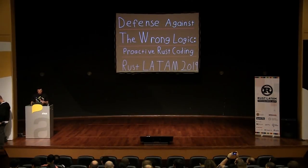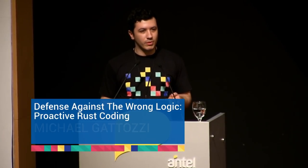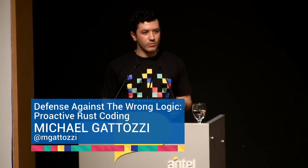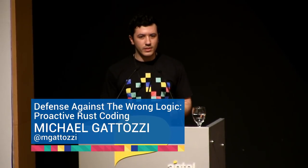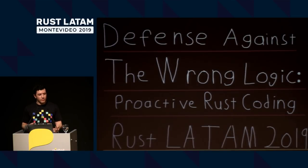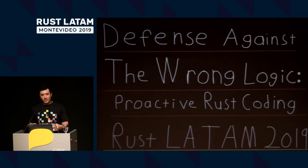This talk is entitled 'Defense Against the Wrong Logic: Proactive Rust Coding.' It's about how we can use a couple of guidelines and the compiler to stop ourselves from doing logic bugs. Rust prevents you from doing data races and things like that, but it doesn't exactly stop you from doing the wrong thing yourself.